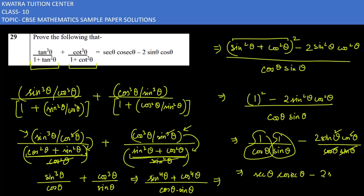The second term becomes 2sinθcosθ. So the final result is secθ·cosecθ - 2sinθcosθ, which matches the right-hand side of question 29. This completes the proof, and now we move on to question 30.